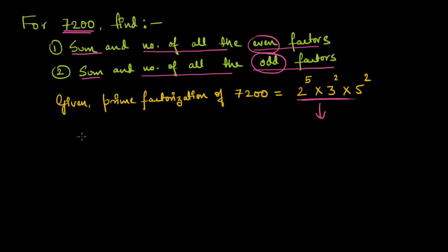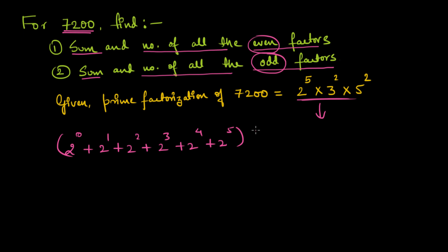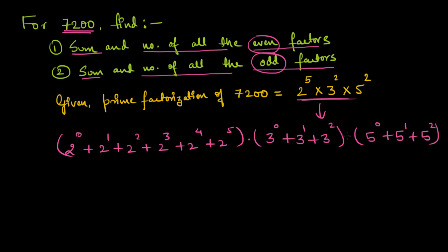To find the total number of factors and the sum of them, I'll expand the prime factorization by writing each individual prime factor starting with the lowest power from zero to the highest power available: (2⁰ + 2¹ + 2² + 2³ + 2⁴ + 2⁵) multiplied by (3⁰ + 3¹ + 3²) multiplied by (5⁰ + 5¹ + 5²). Multiplying these three brackets together gives the sum of all the factors of 7200.